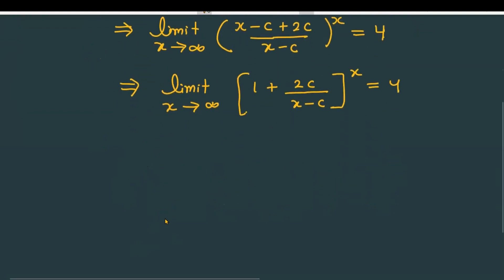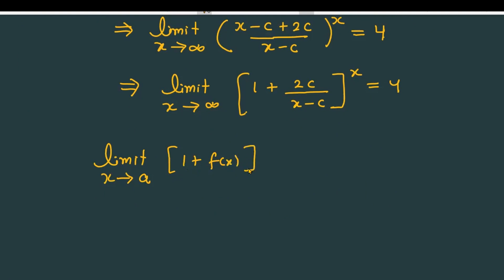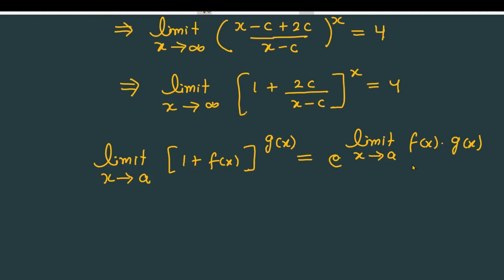The concept is: if you have a function of the format — limit x approaching to a of [1 plus f(x)] raised to the power g(x) — then the limit of this is e raised to the power [limit x tending to a of f(x) into g(x)]. First, you need to recognize this format: [1 plus f(x)] raised to the power g(x).